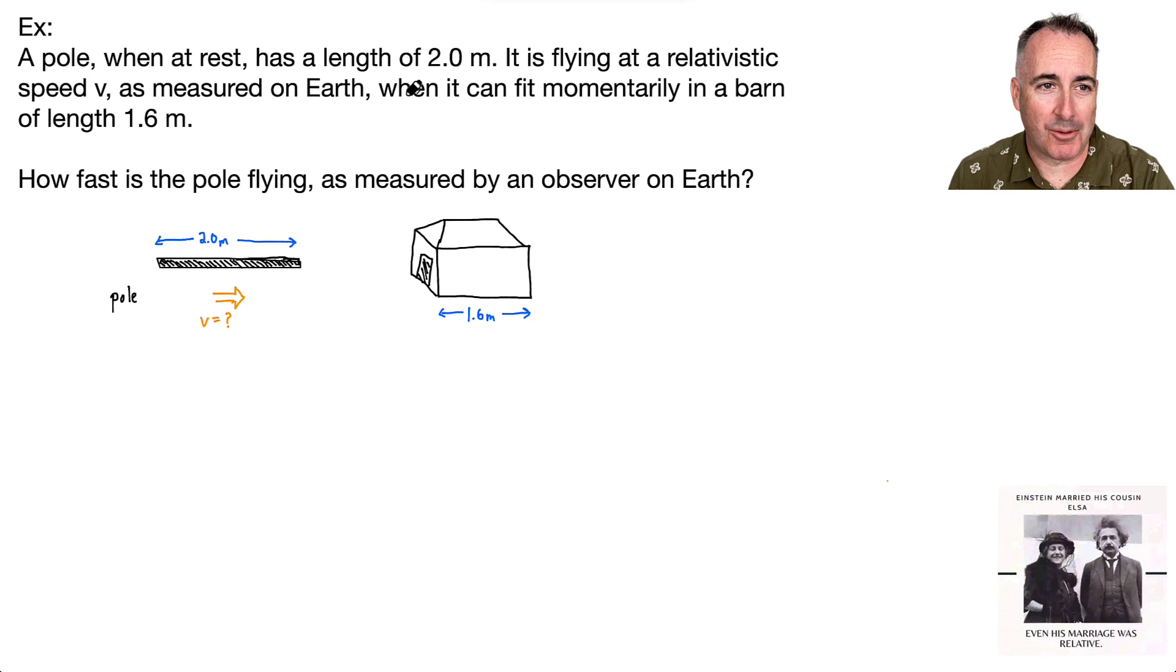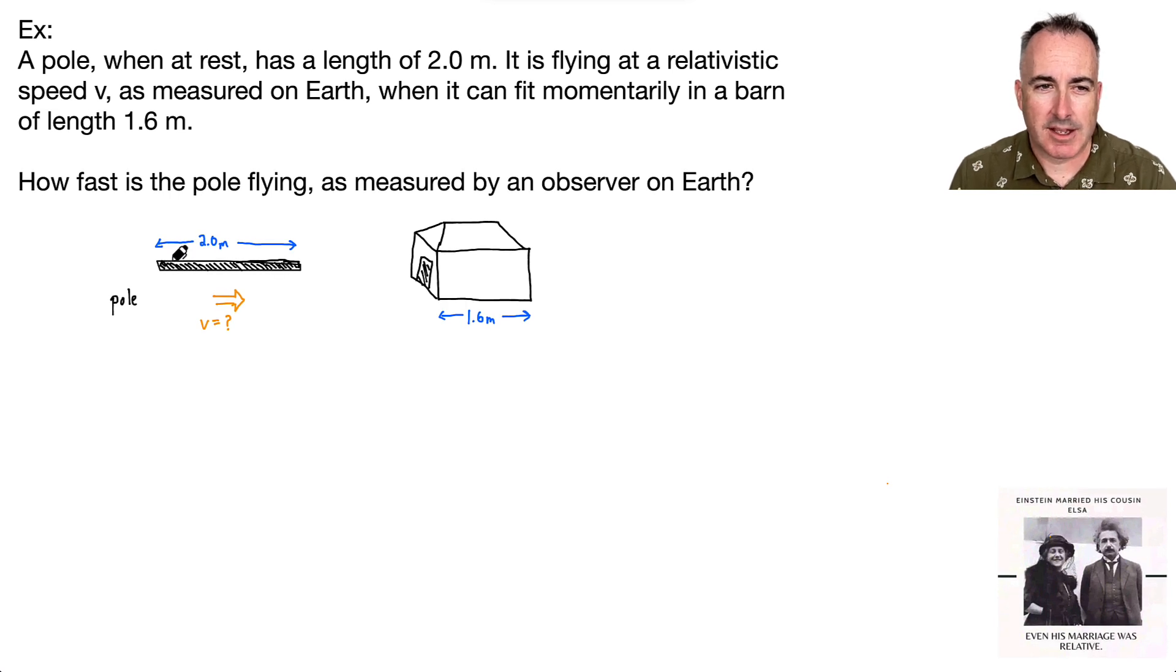All right, here we go. We've got a pole. This is an interesting one, a common idea. The basic idea is you have a pole two meters long, and it's flying at a relativistic speed v. Someone on Earth is watching it zoom by. And the weird part is it can momentarily fit in a barn of length 1.6 meters, even though at rest it's two meters long. For a split second, it can actually fit within the two doors of some barn. This is real physics, so this could theoretically happen.